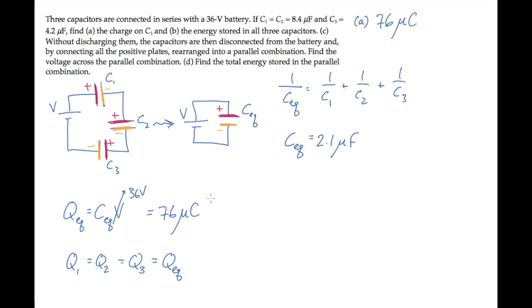Part B asks us to find the energy stored in all three capacitors. We can do this in one of two ways. We can add up the energy stored in each capacitor, or we can realize that all those charges are equal, and the voltages sum to the battery voltage, 36 volts, and rewrite this as the energy stored in the equivalent capacitor. Either way you calculate it, you find the energy is 1.4 times 10 to the minus 3 joules.